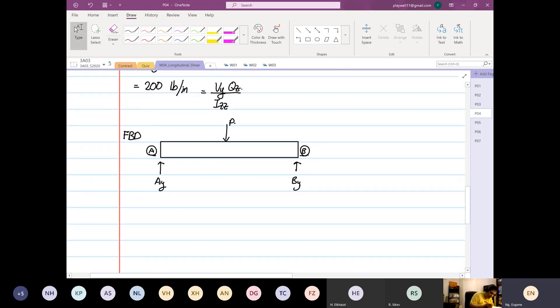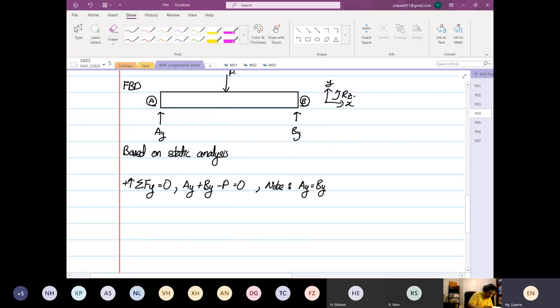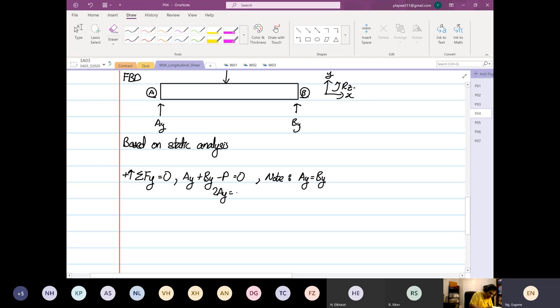And we are aware that this is under force P. We know based on static analysis, given the transformation, X and Y rotation about Z, summation of forces Y is equal to 0. AY plus BY minus P is equal to 0. And note, due to symmetrical loading and geometry, AY is equal to BY. So 2AY is equal to P. AY is equal to P divided by 2.